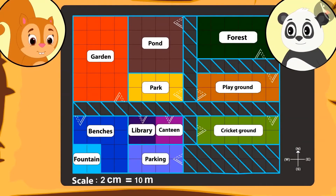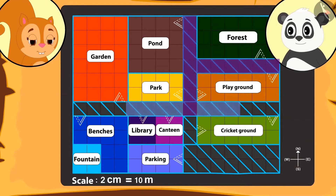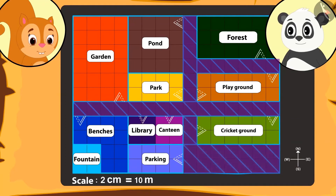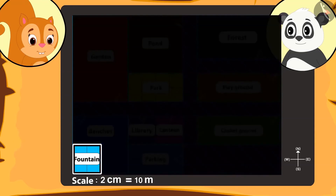Chanda tells Golu that she can spot roads everywhere on the map — there is at least one road near every place. Then Golu tells her that there is one place besides which there is no road. Can you find that place on the map? That's right — there is no road near the pond.